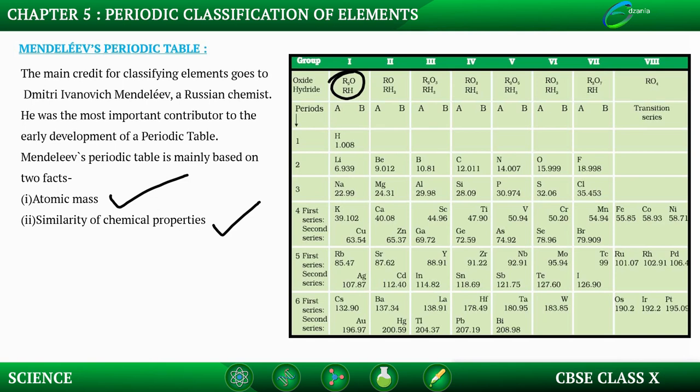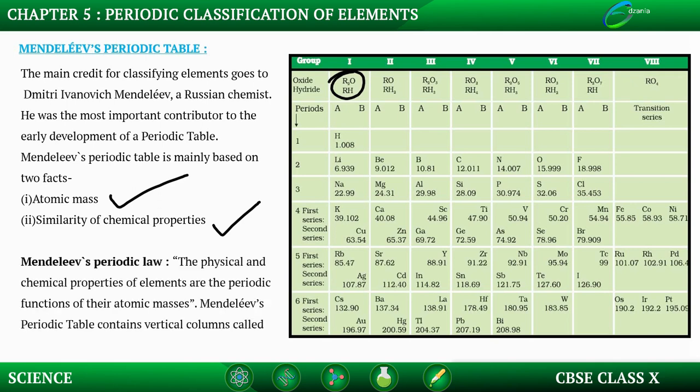To form this table, Mendeleev took 63 cards, wrote the name of all the elements known at that time, and pinned them on a bulletin board according to similar properties. He then observed that all these elements are placed in increasing order of their atomic masses, which led him to formulate Mendeleev's periodic law: the physical and chemical properties of elements are a periodic function of their atomic masses.